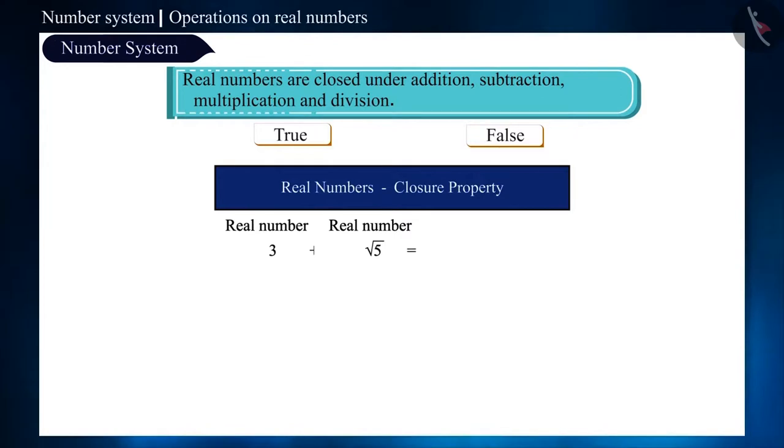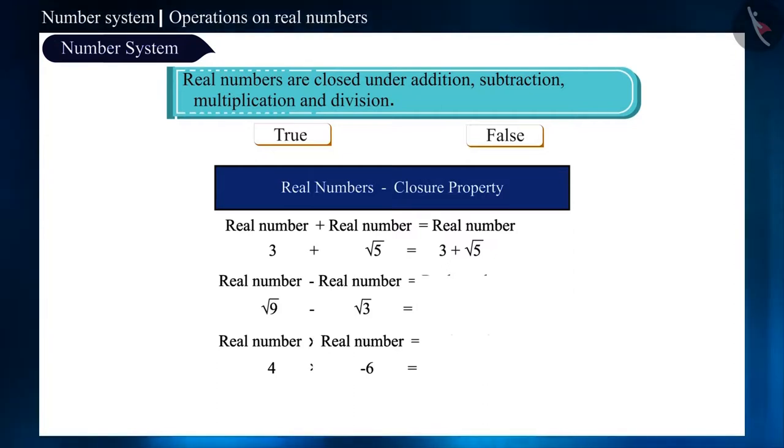Here are two real numbers. On adding the two, we get a real number. Similarly, on subtracting or multiplying two real numbers, we will get a real number only.